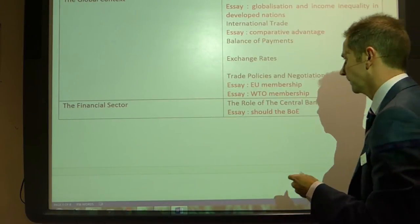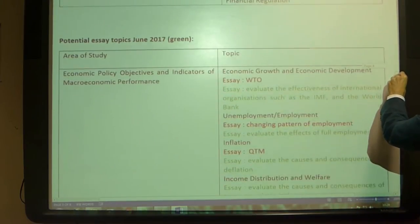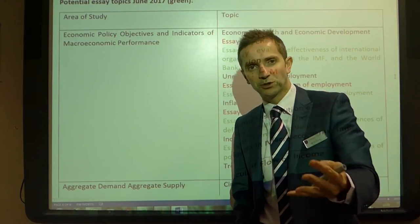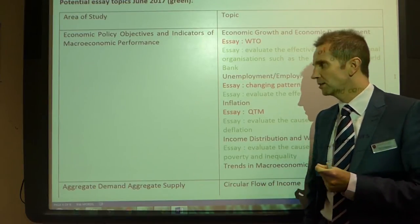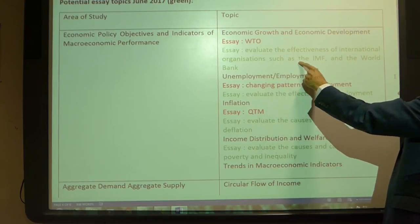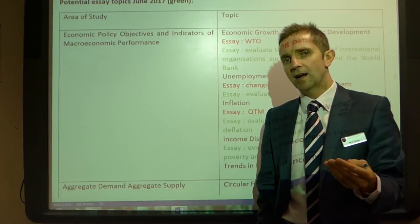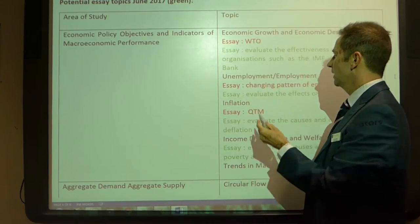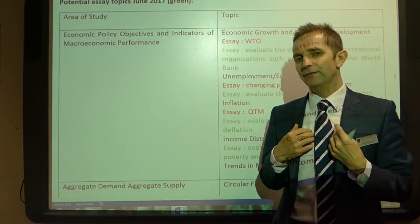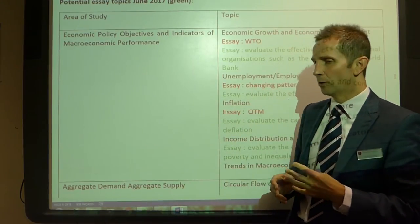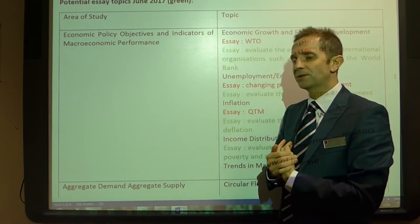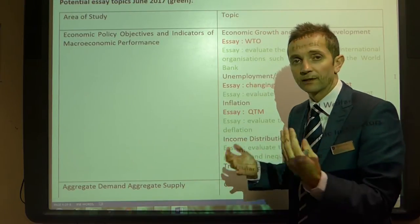Now let's consider some essays which might be more likely to appear on your papers. First: evaluate the effectiveness of international organisations such as the IMF and the World Bank. We've already had an essay on the WTO, so it's not unreasonable to think we could get one on the IMF or the World Bank. Again, if it were me I'd veer away from that given the depth of coverage in the textbook, but if you've gone into it in more detail you might feel comfortable with it.